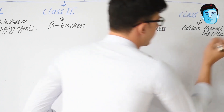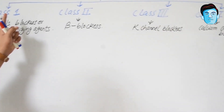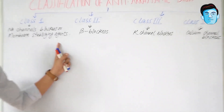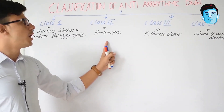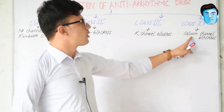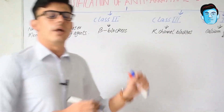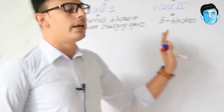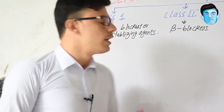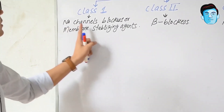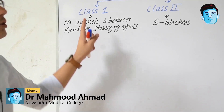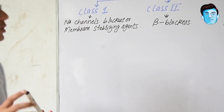To repeat: class 1 contains sodium channel blockers or membrane stabilizing agents, class 2 are beta blockers, class 3 are potassium channel blockers, and class 4 are calcium channel blockers. Each class contains a lot of drugs, so we will go through mnemonics. Now let's talk about class 1, the sodium channel blockers. Class 1 anti-arrhythmic drugs are further classified into three parts.